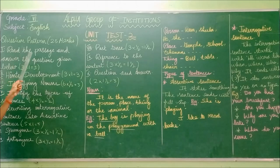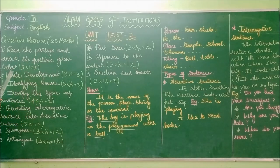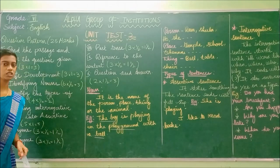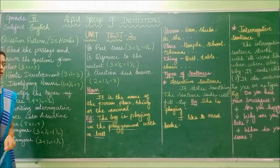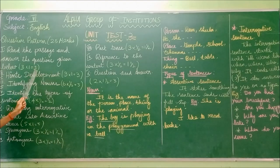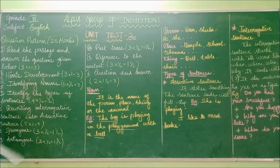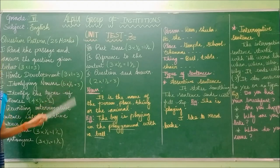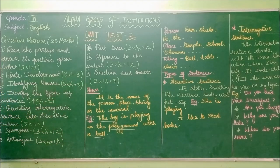The first section is: read the passage and answer the questions given below. You will be given 3 questions and have to write for 3 marks. The second one is hints development, which also contains 3 marks — there will be one hints development question worth 3 marks.